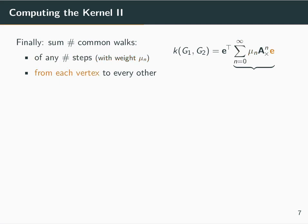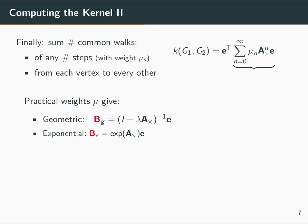We are counting all walks from each vertex to every other, and this gives us the final value. Now, depending on the weights that we are going to use, two particularly interesting cases arise: the geometric and the exponential kernel.